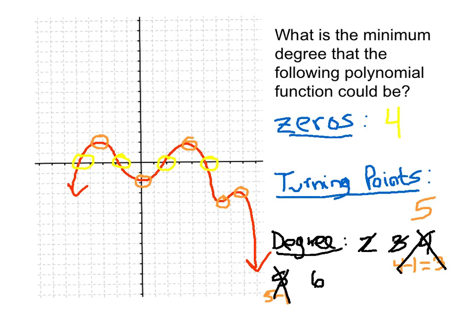What about degree 6? The zeros are satisfied — we could have four zeros. And a degree-6 polynomial can have 6 minus 1, or 5 turning points. That works! So the minimum degree is 6. The key idea: look at the largest constraint between the zeros and the turning points. It must be at least degree 4 due to four zeros, but the five turning points push the minimum degree up to 6, since a degree-n polynomial can only have n minus 1 turning points.